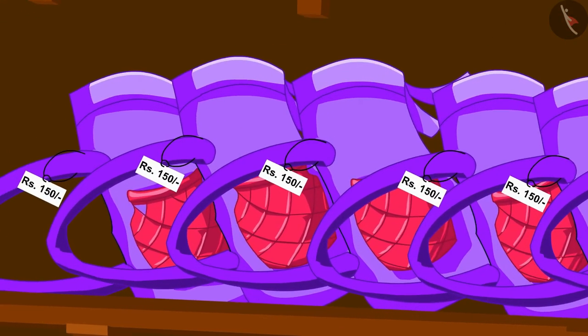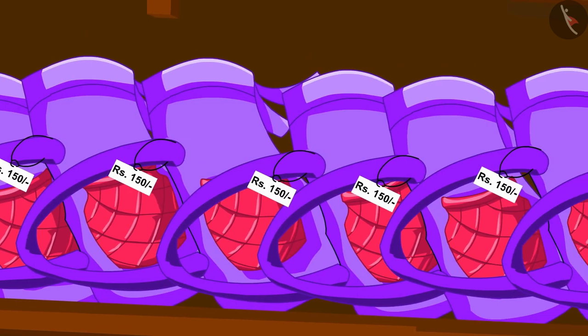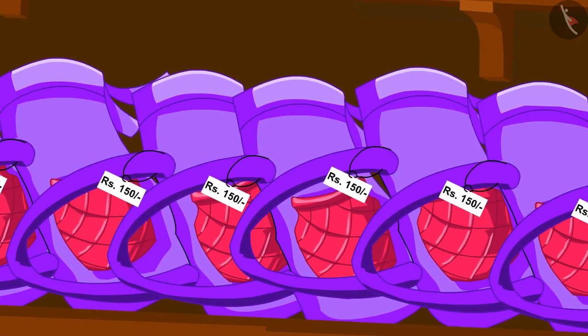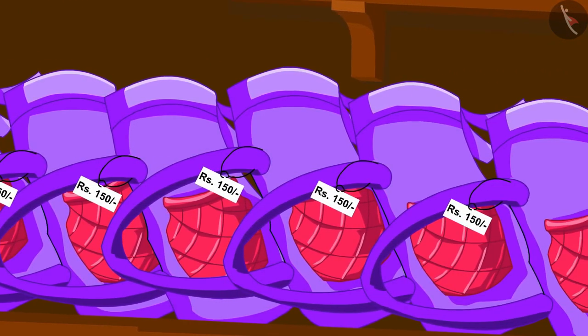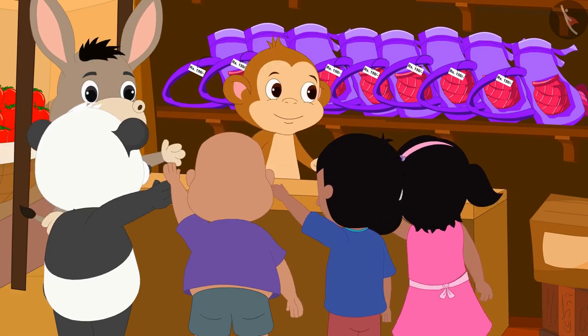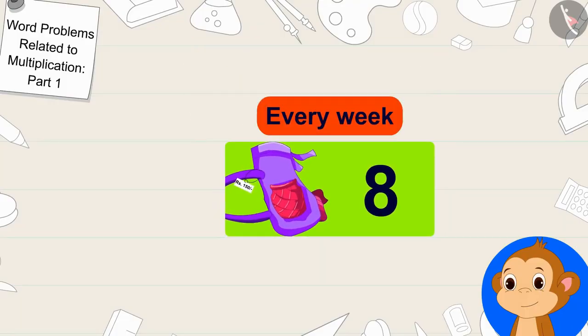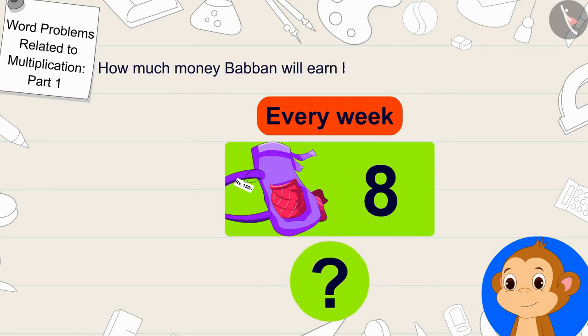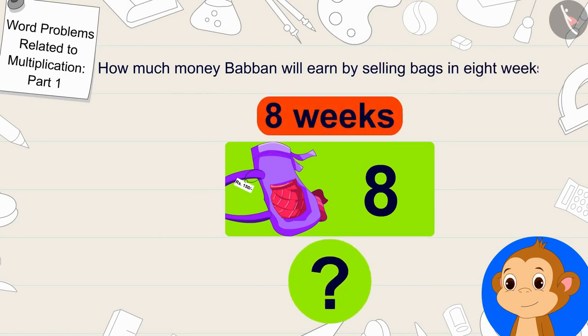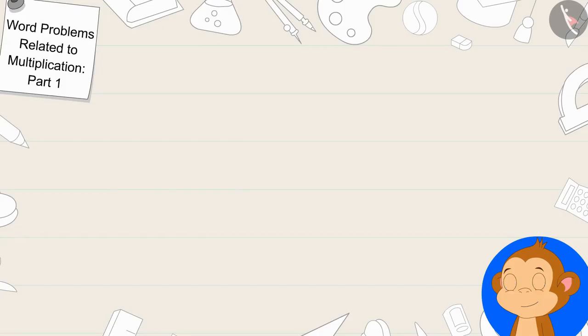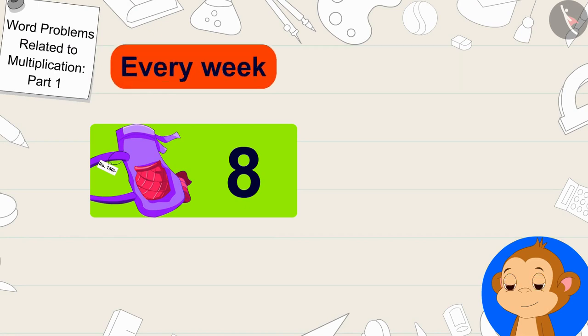Babban has kept the price of each bag in his shop at 150 rupees. Babban's shop worked wonderfully. He is selling eight bags every week. Children, can you tell how much money Babban will earn by selling bags in eight weeks? Babban sells eight bags every week.